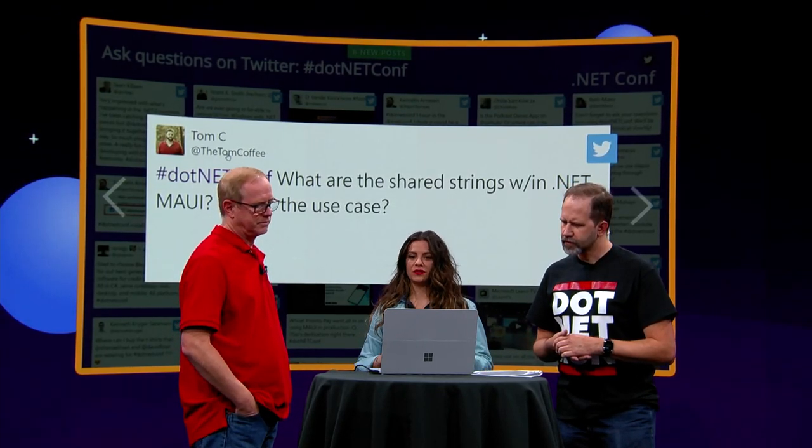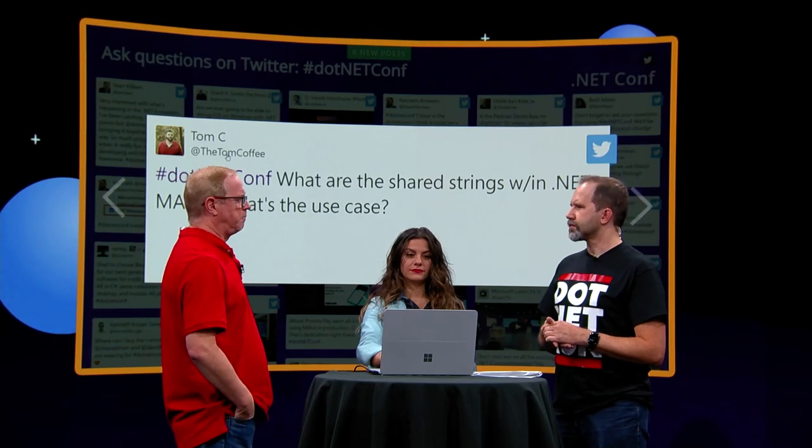What are the shared strings within .NET MAUI? What's the use case? When Maddie was doing some of those demos, there was a common place to put stuff. Really, what that's more about is you're actually building four different apps — a Windows app, a Mac app, an iOS app, an Android app. So whether it's SVG files or strings or anything else, what do you want to share across all those different platforms is where you would stick that kind of stuff.